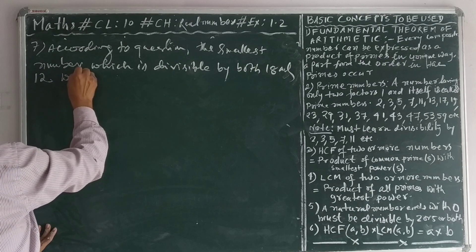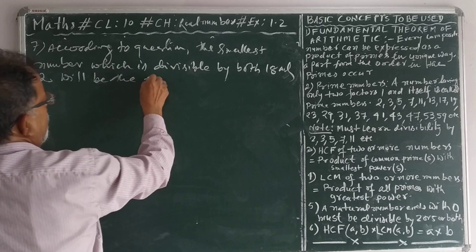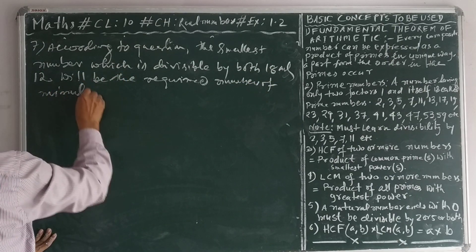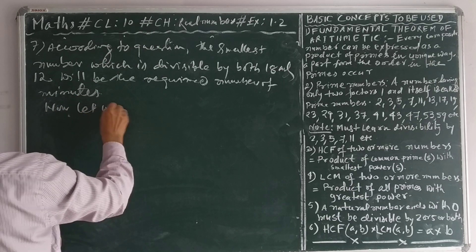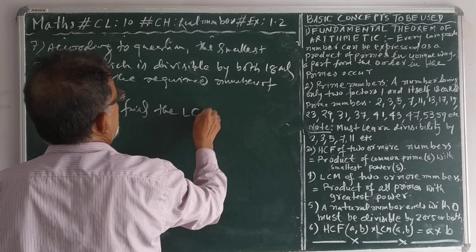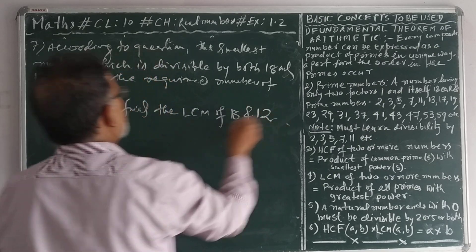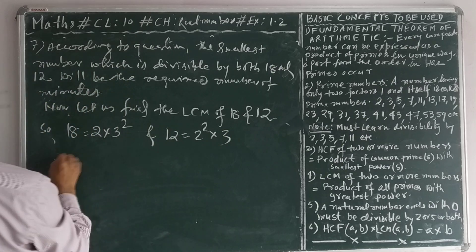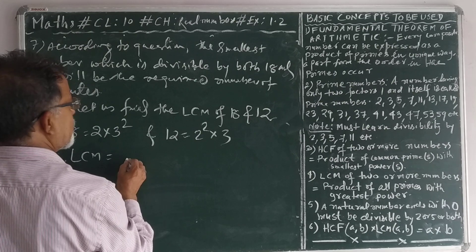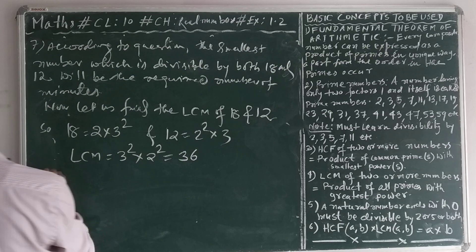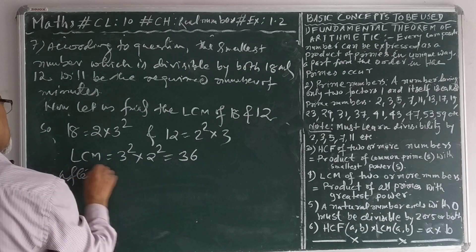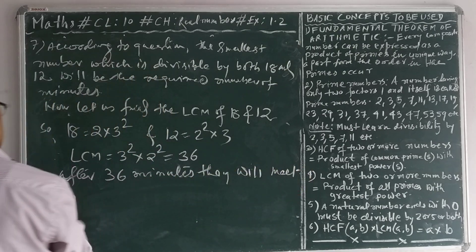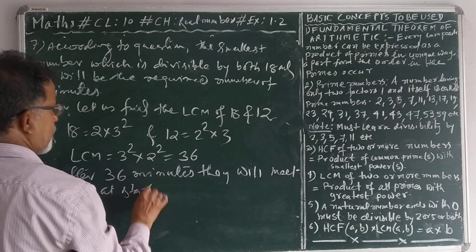12 will be the required number of minutes. Now let us find the LCM of 18 and 24. So 18 is equal to 2 into 3 to the power 2, and 24 is equal to 2 to the power 2 into 3. Therefore, LCM is equal to the product of all primes with the highest power: 3 to the power 2 into 2 to the power 2, which is equal to 36. Therefore, after 36 minutes they will meet again at the starting point.